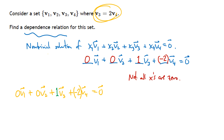As long as at least one of the x's is not zero, we have a valid dependence relation. I hope this helps — you'll find homework problems like this in your assignment on this material, so review this video as many times as you need as you work through those problems.